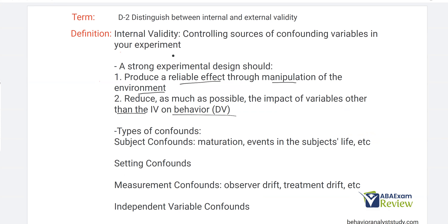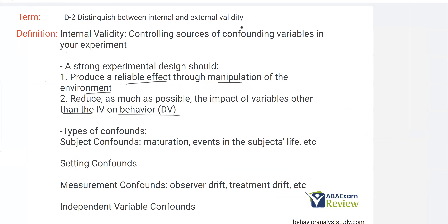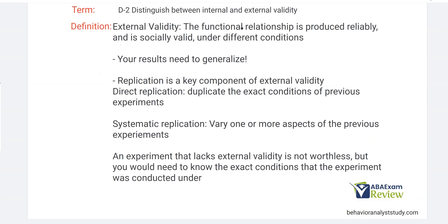Again, internal validity: you want a functional relationship, meaning whatever changes are seen in the behavior or dependent variable, you are creating those changes through your manipulation. External validity — much more simple. With external validity, the functional relationship is produced reliably — so it's repeatable — and is socially valid under different conditions. In other words, we're looking to generalize.